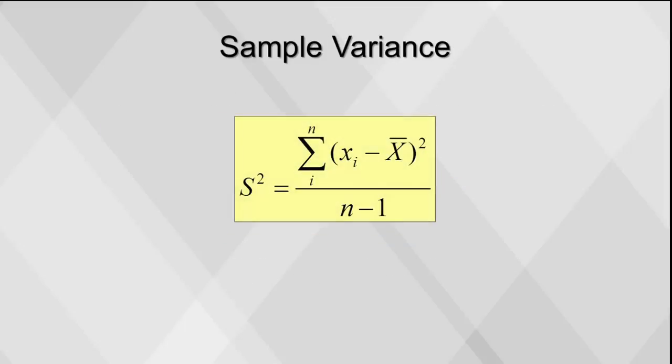Sample variance is calculated as the average of squared deviations of values from the mean as shown here. We square the differences from the mean to provide equal weight to observations below the mean versus those above the mean. Because we square the difference, values that are further away from the mean get higher weight than those close to the mean.